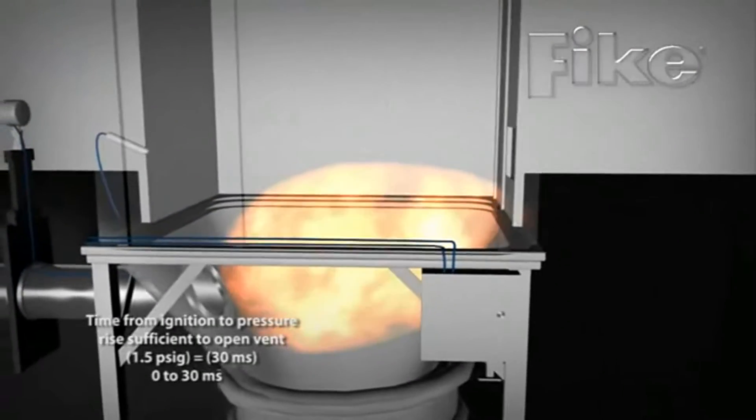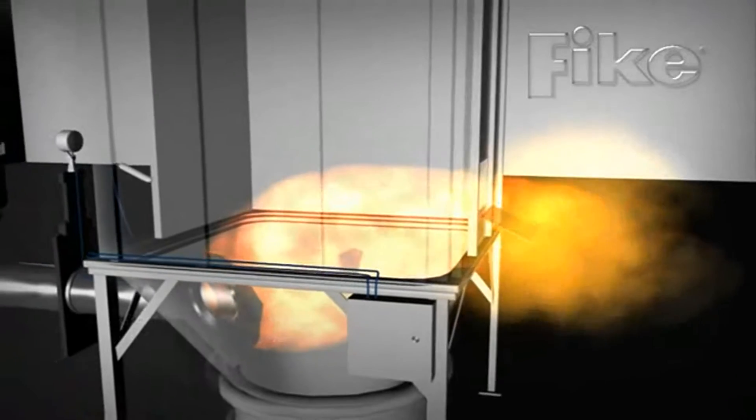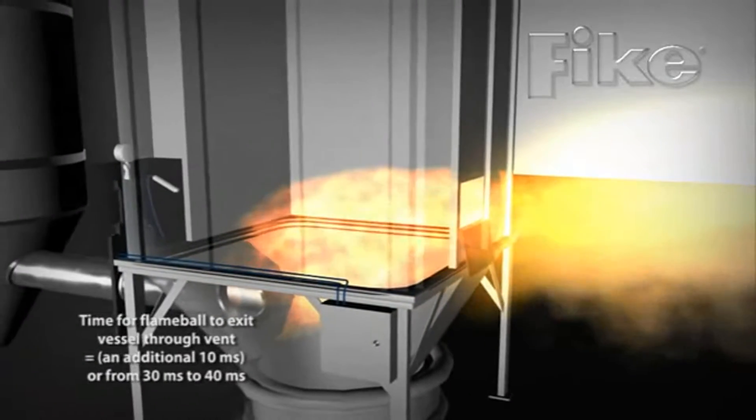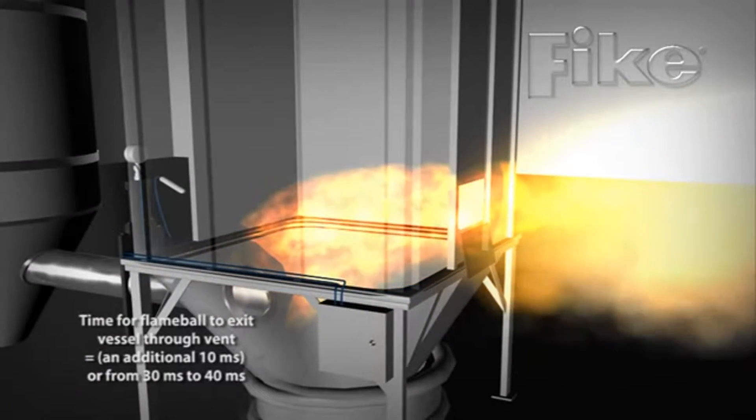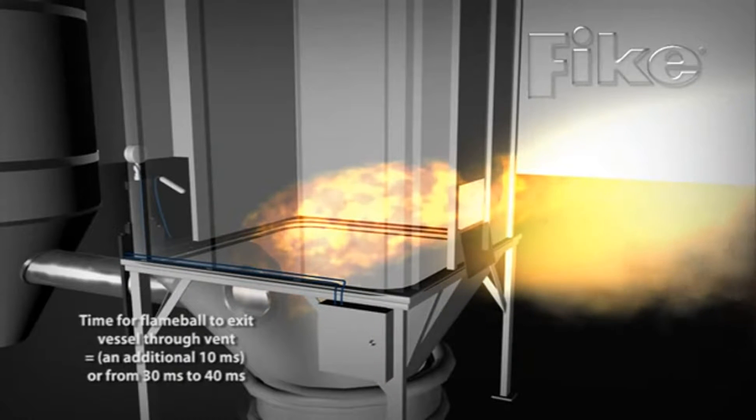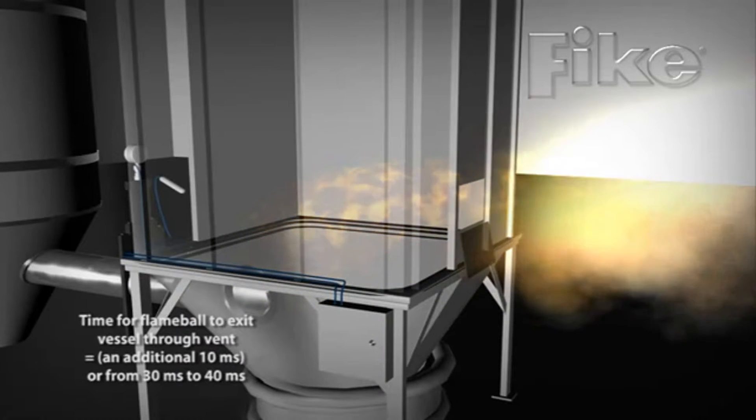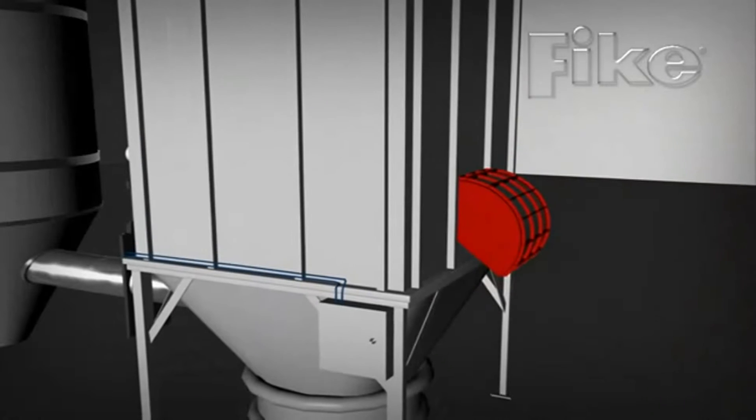The explosion vent ruptures at a preset pressure, limiting the stress on the vessel and allowing it to maintain structural integrity, while also releasing that pressure and allowing the fireball to vent into a safe area outside the facility.